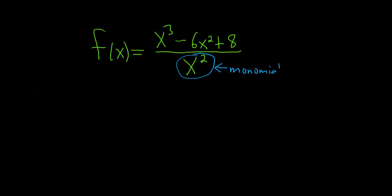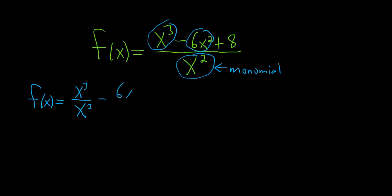you want to break it up as follows. So f of x equals — just take this piece here, x cubed, and then divide that by x squared, and then minus the next term, 6x squared, divided by x squared, plus the last one, which would be 8, so 8 over x squared. Whenever you have a monomial like this on the bottom, this is a better strategy than going through the laborious quotient rule.